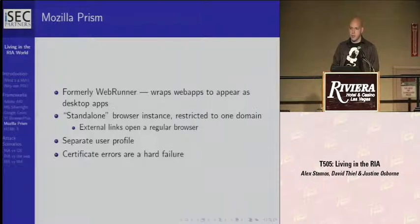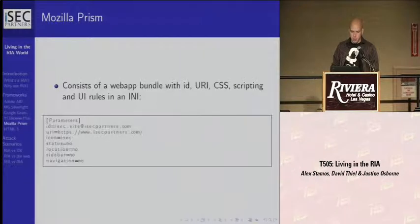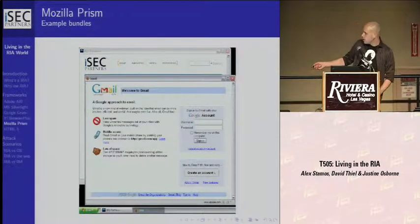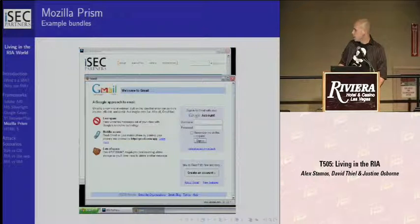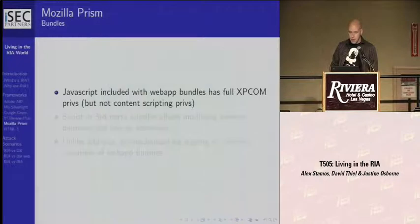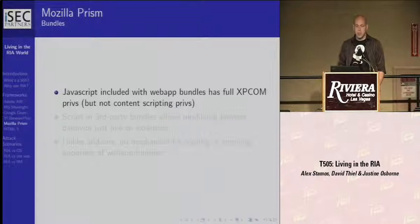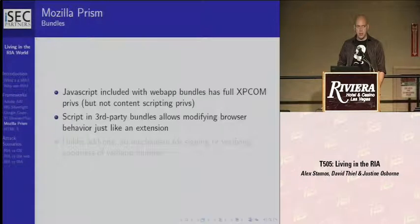Prism apps are really trivial to make. In their most basic form, all they need is an INI file that says where to go, some CSS layout stuff, some JavaScript rules. You can see a couple of Prism apps sitting in the taskbar without any location bars — you can write something that looks like a full app like Thunderbird, and it's not even apparent it's a web app. The place where Prism falls down is that the JavaScript UI you install has full XPCom scripting privileges — the language people write Firefox add-ons in. Anything a Firefox add-on can do, you can basically do in one of these web app bundles.